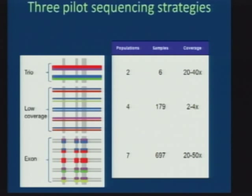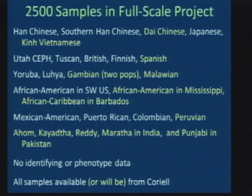Where we are at the moment: we have very mature releases of data on three pilot projects — one looking at some trios, one looking at low-coverage samples, and one focusing on some exons. There are 180 of these low-coverage genomes but about 700 exons at different coverages, and we've learned different things from each. Going forward, about 2,500 samples in the full project spread across the world, but not randomly — the idea is to collect them in regions of major medical genetics interest in little satellite groups of populations, essentially five lots of 100 samples from particular geographic regions such as Europe or East Asia.